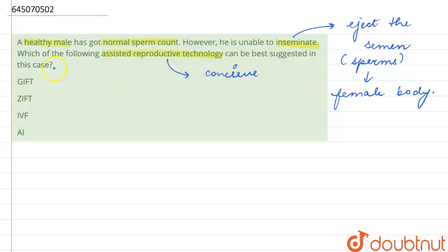All right, so let's see the first option given to us. The first is GIFT. GIFT is gamete intra fallopian transfer. Gamete intra fallopian transfer is the type of method that is used for females who cannot produce ova. All right, so this is our wrong answer.